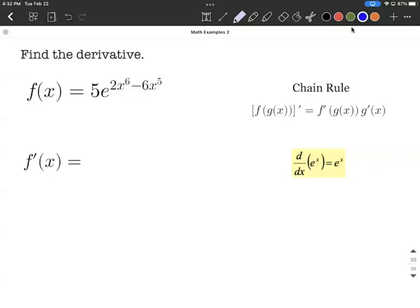Okay, let's find the derivative. In this case, we have e raised to this polynomial function. We want to think about this as a function within a function. We have that polynomial, 2x^6 - 6x^5, inside of the e raised to a power function.